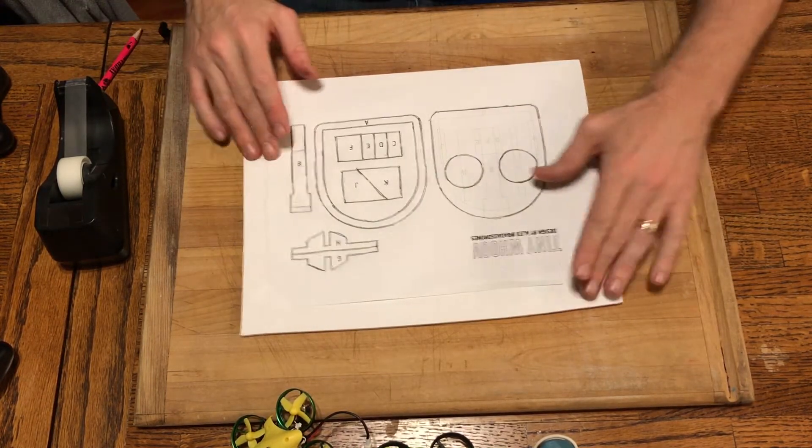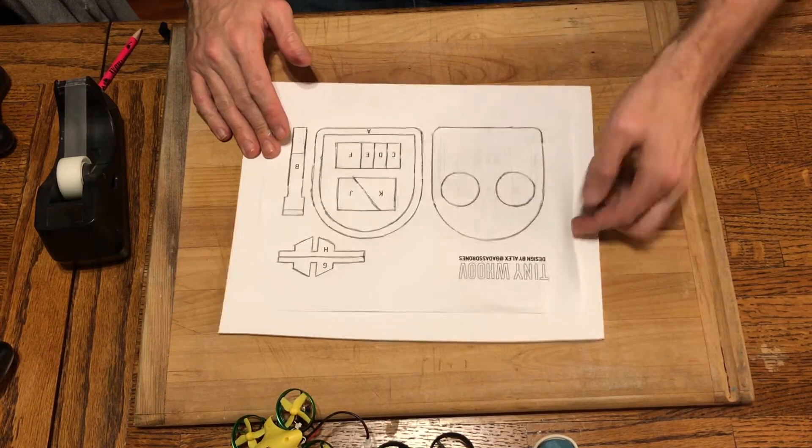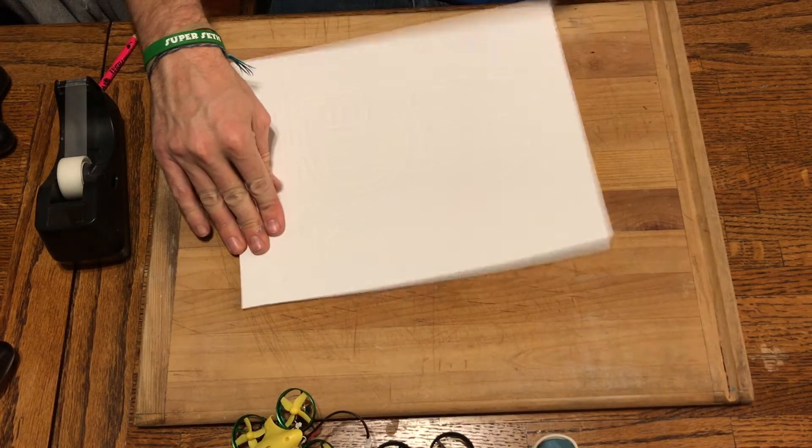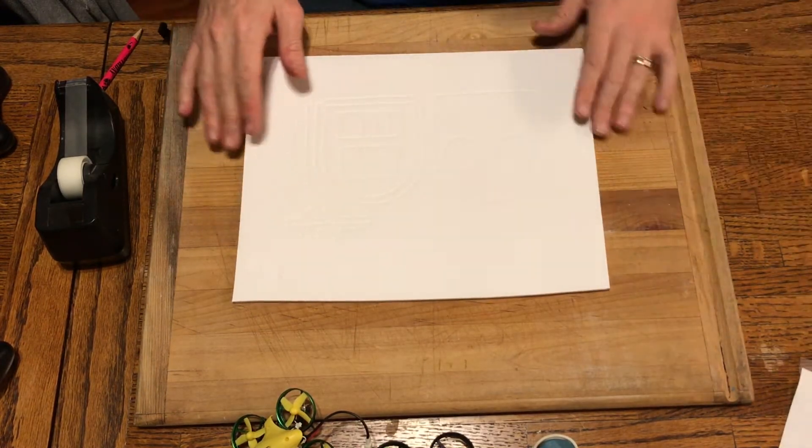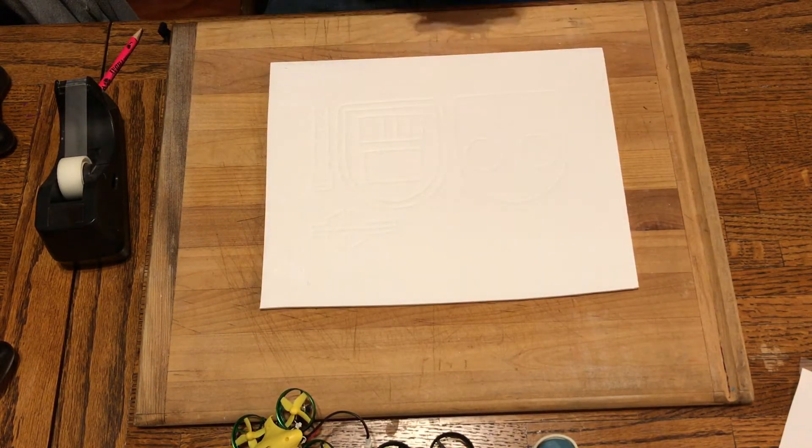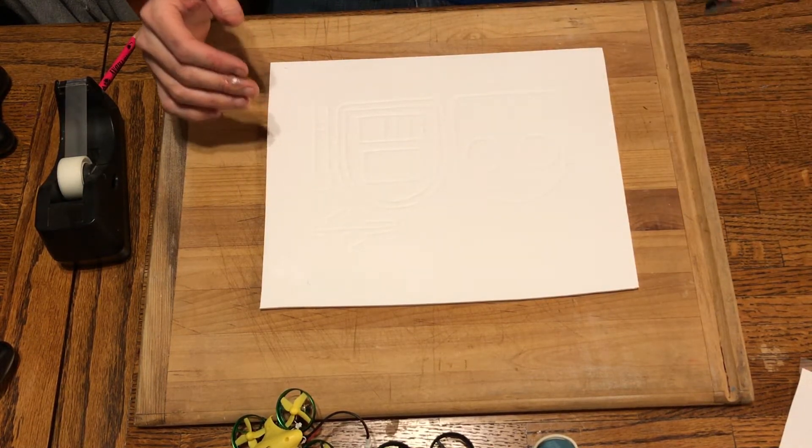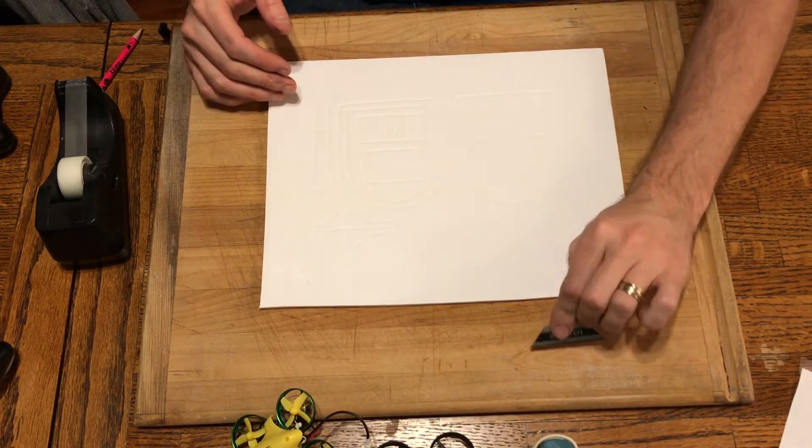So there we go. Now with everything traced on there, now we can remove our plans here from the top of the piece of foam. And you may or may not be able to see it through the camera, but there is an indentation of our project on here. And now we're going to grab our razor blade and we're going to work our way around and cut this out.